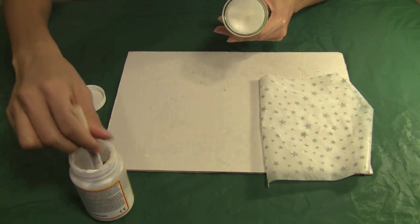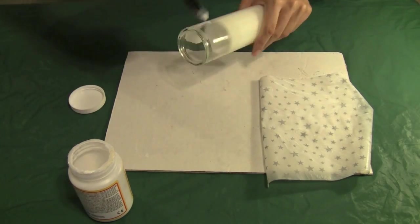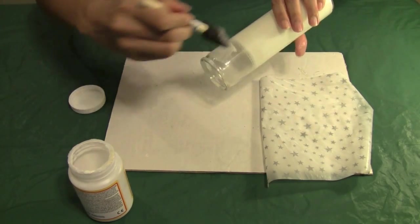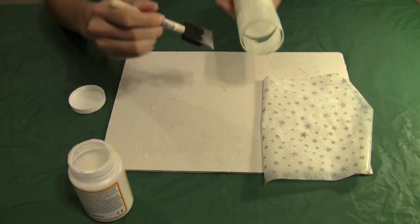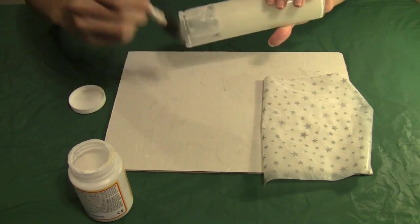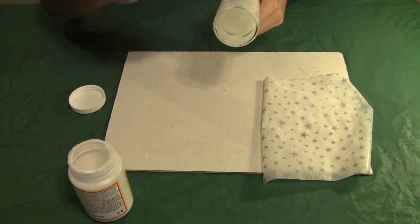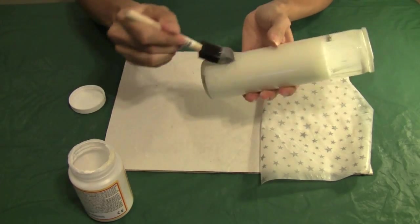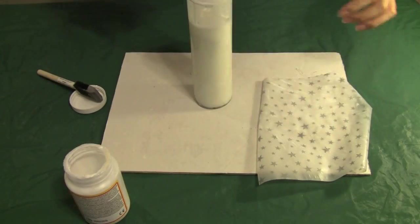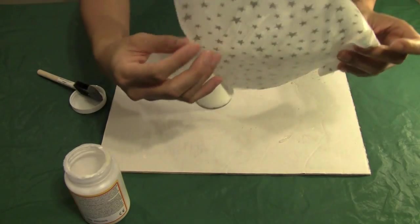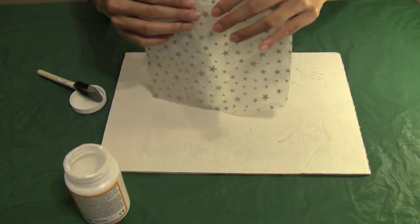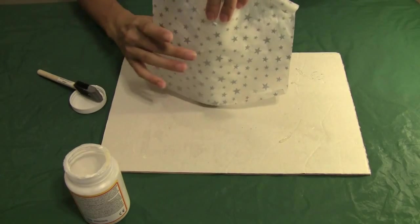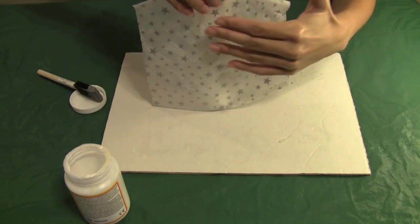And now I'm going to add Mod Podge to the top edge of my candle just to get it to stick a little bit better and to the bottom as well. And now we will add the paper to our candle.